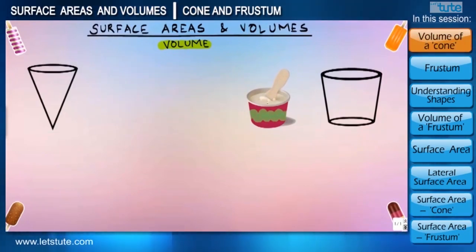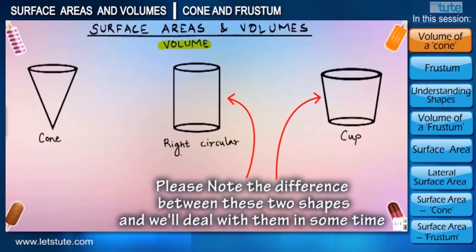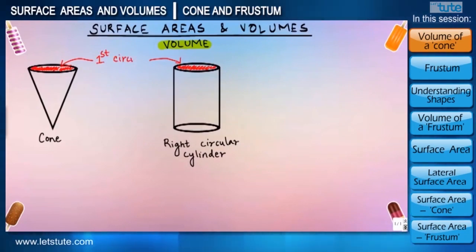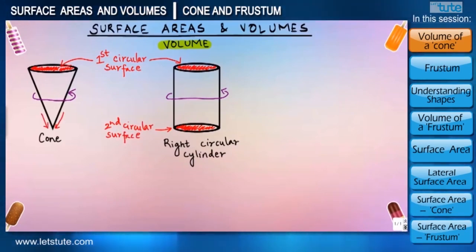So to find the volume, let us think about another shape which is relatively similar to a cone, and what comes to my mind is a right circular cylinder. Both of these shapes have a circular top, then comes a curved surface, with the only difference being that a cylinder shows another circular surface at the other end, whereas the curved surface of a cone seems to taper and has no other circular surface.